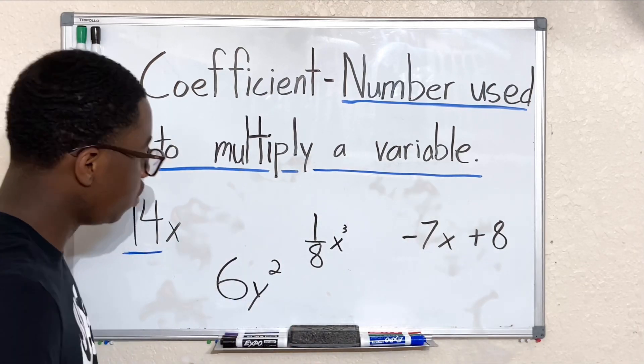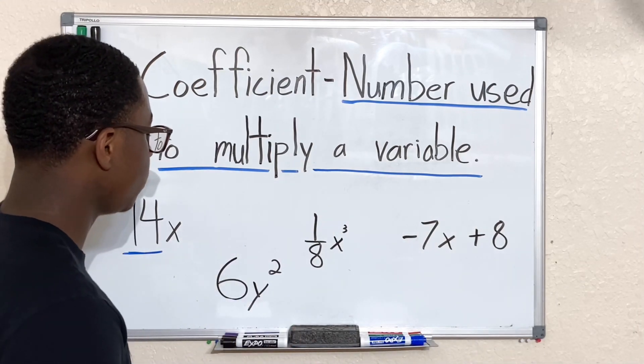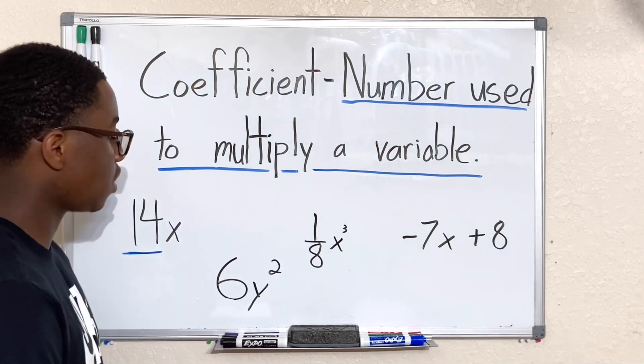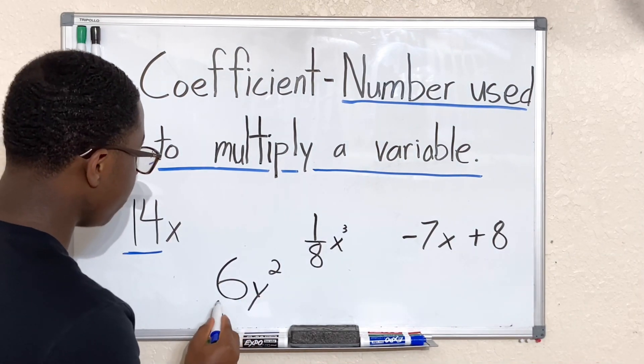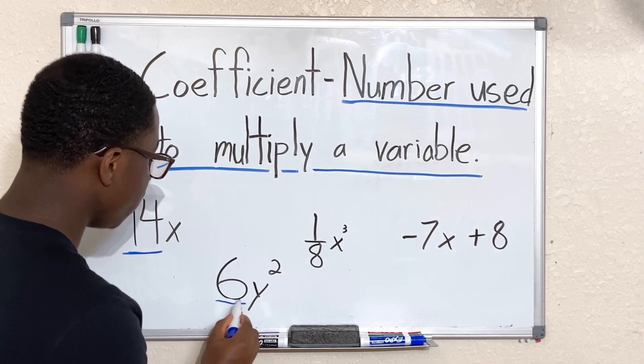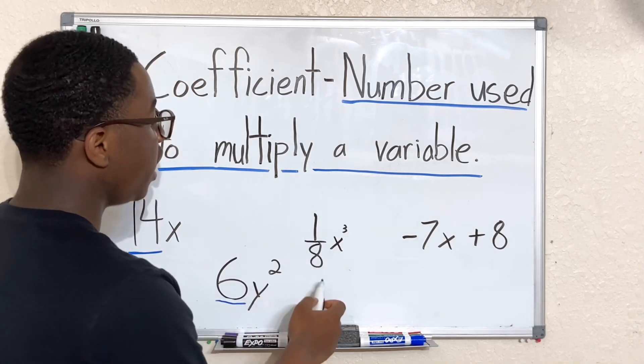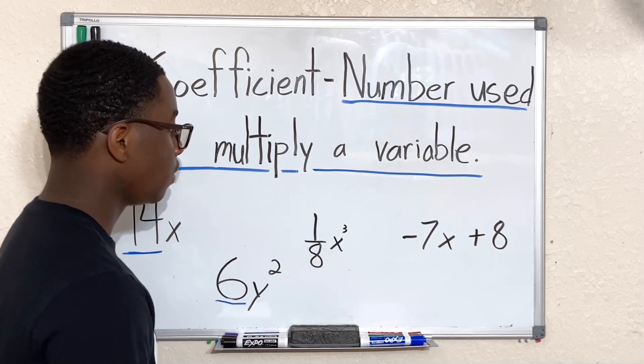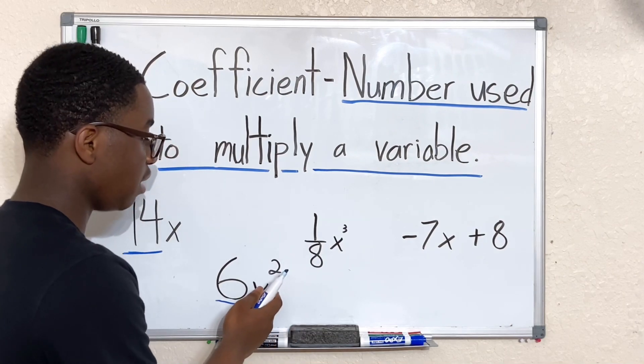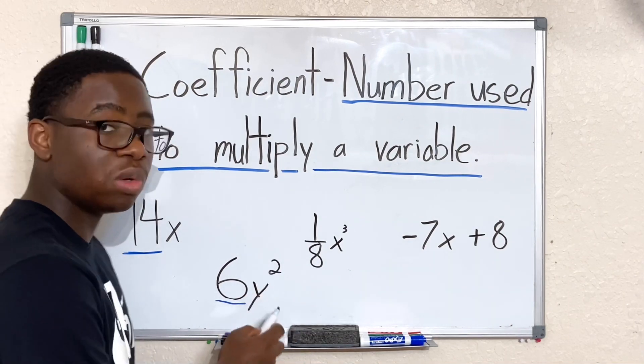Now we have two numbers. Which one is our coefficient? We know that 2 is going to be our exponent, so that's not our coefficient. That means that 6 is going to be our coefficient. Here we have 1/8x to the third power. We know from the last example that since we have exponents, exponents are not considered as coefficients.